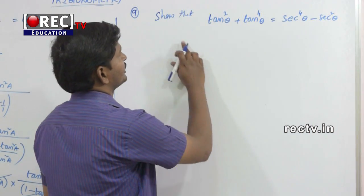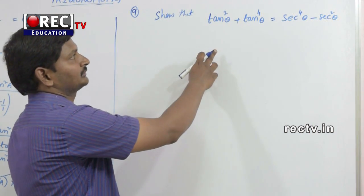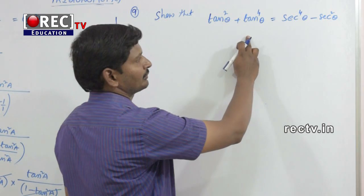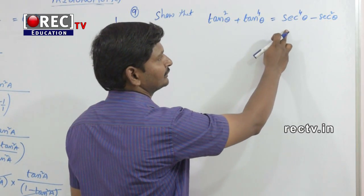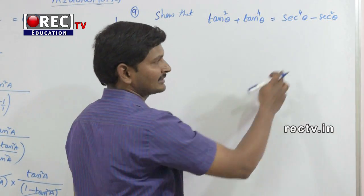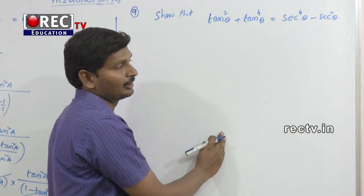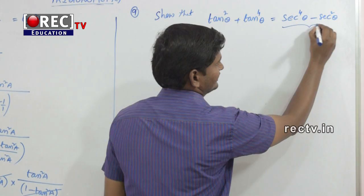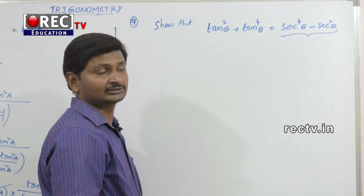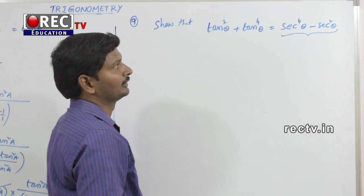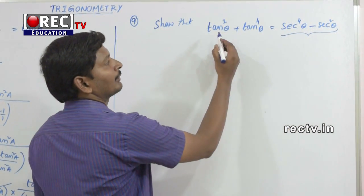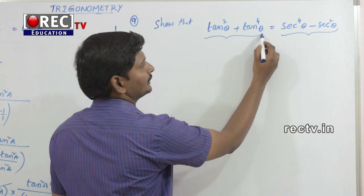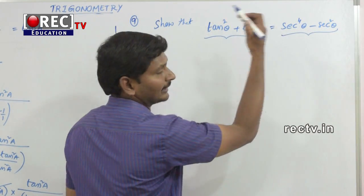Question number 9: Show that tan²θ + tan⁴θ = sec⁴θ - sec²θ. We have to observe that the RHS is in sec²θ only, which means we have to convert all the tan terms in terms of secant.